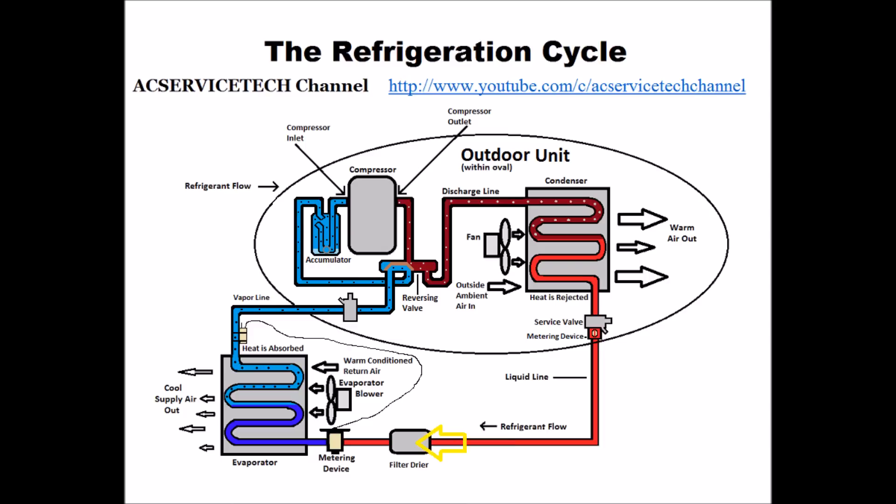It then goes through the filter dryer where it collects any contaminants and water vapor. The filter dryer's job is mainly to hold water vapor and it has a fixed capacity — you don't want water mixing with the refrigerant because it can turn into alcohol and acids. It continues as high pressure, high temperature liquid refrigerant and hits the metering device, which in this case is a thermostatic expansion valve. The TXV's job is to maintain a certain amount of superheat across the evaporator coil. There's a pressure drop there — it turns the high pressure, high temperature liquid refrigerant into 80% liquid, 20% flash gas by reducing the pressure.